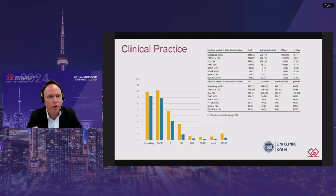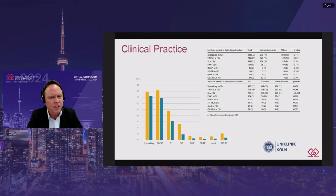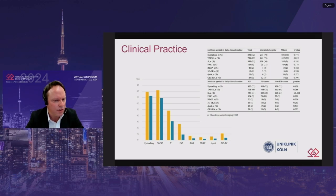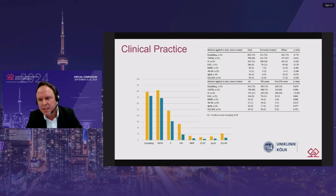A survey — admittedly more than five years old but likely still reflecting clinical practice — was sent to academic and non-academic heart center echocardiographers asking how they assess right ventricular function. Seventy to eighty percent answered: eyeballing and TAPSE. All other parameters were only a few percent. This may have changed as 3D echo availability increased, but it more or less still reflects current practice.